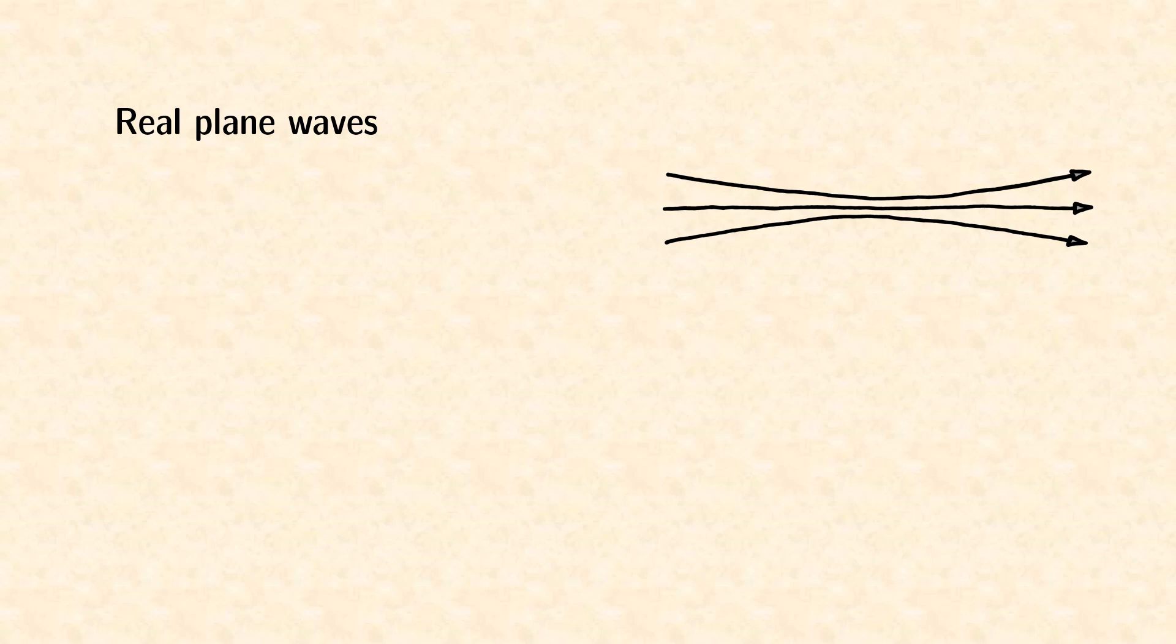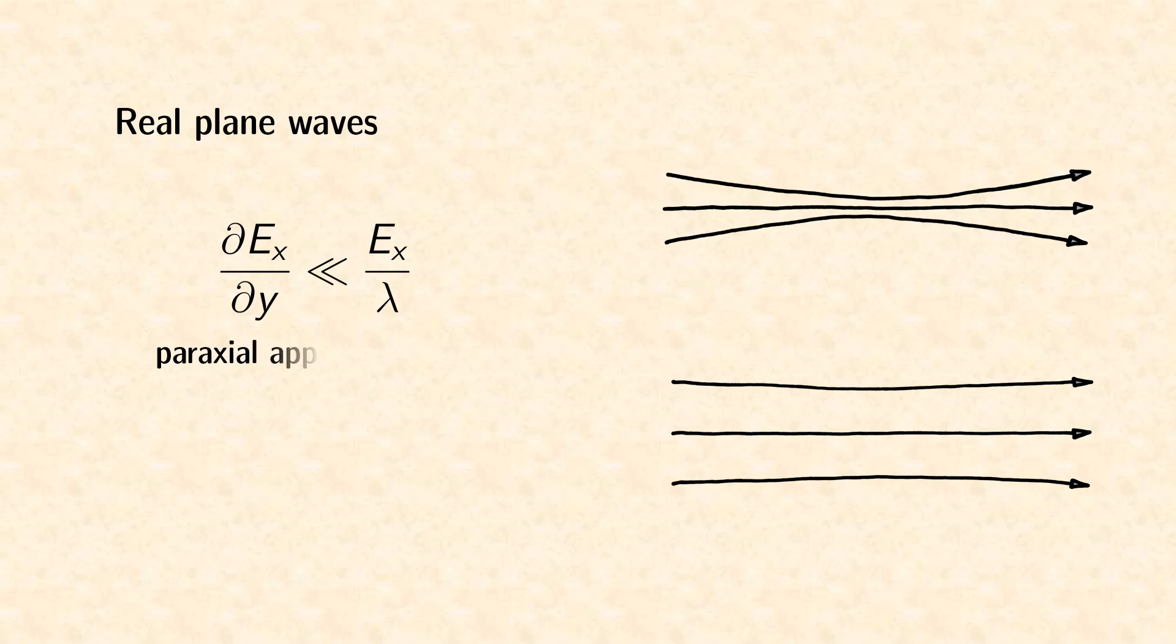A closer look reveals that a beam can be treated as an effectively parallel beam when it does not change its field amplitude significantly over a lateral distance in the order of its wavelength. Such beams are called paraxial beams.